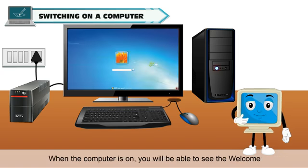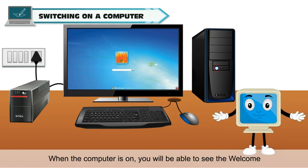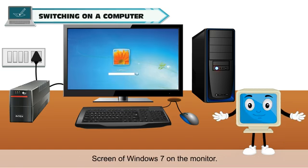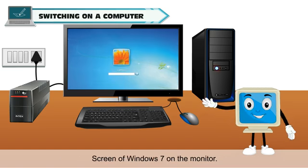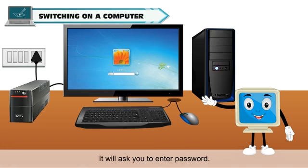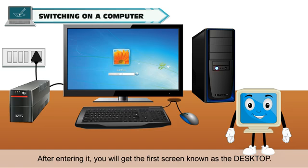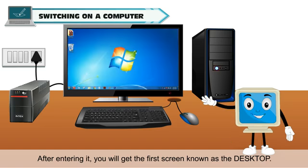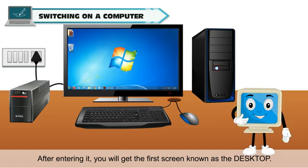When the computer is on, you will be able to see the welcome screen of Windows 7 on the monitor. It will ask you to enter a password. After entering it, you will get the first screen known as the desktop.